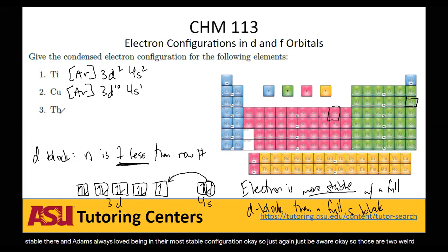So those are two weird cases. Now we have Tb. If we look for that, it's down here in our lanthanides. And we're going to write out what this is. So the thing about d block is that the principal quantum number is always one less than the row number. But the thing about the f block is that the principal quantum number is always two less than the row number.